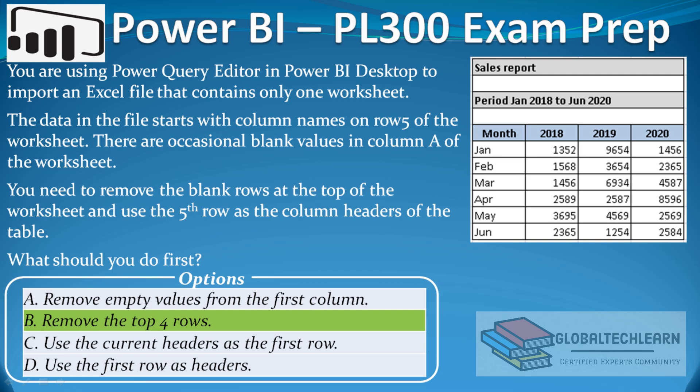As mentioned, this question has been asked in various ways in Power BI exams. In another variant where multiple answers must be selected, we would choose both Option B and Option D — that is, remove the top 4 records and then use the first row as the header.